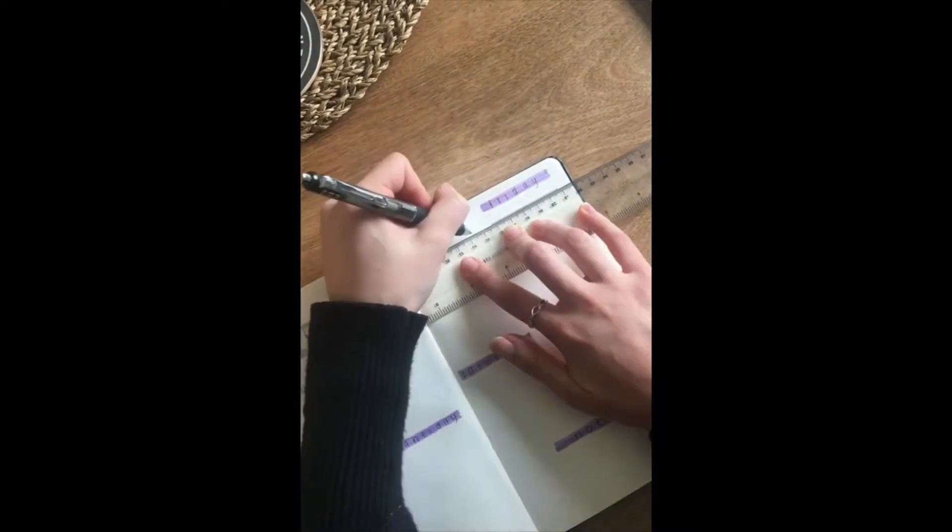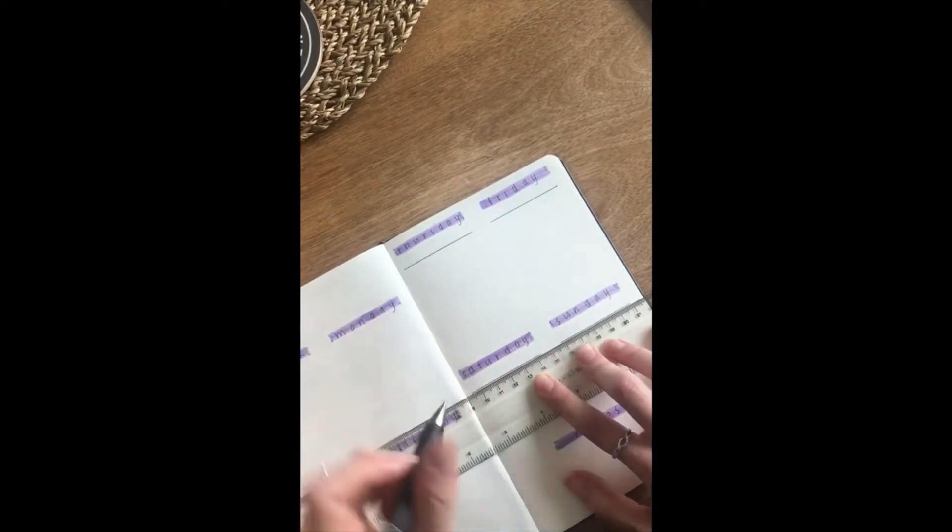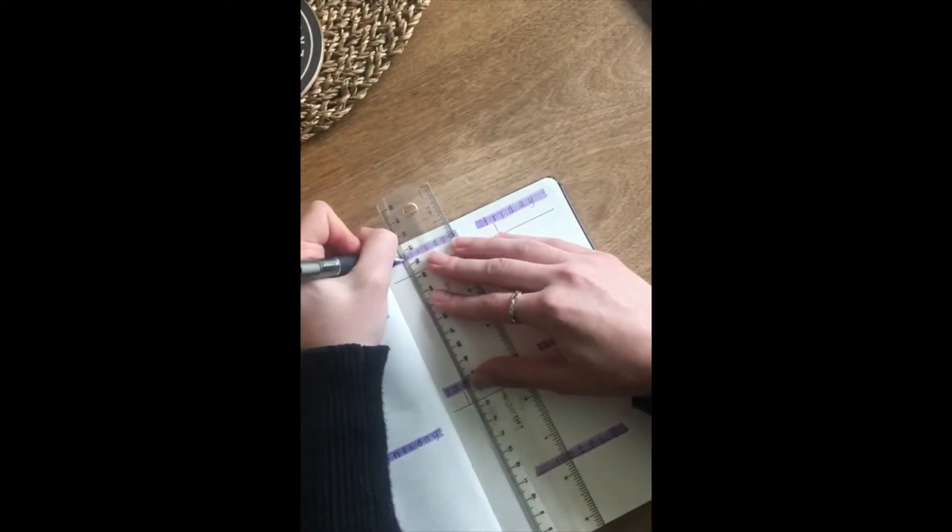So once your days are done, I'm going to start drawing lines so they can include the date and month. I use a ruler to make sure the lines are straight, but you don't need to if you don't want to. Inside of the lines, I'm going to put the month on the right and the date on the left.